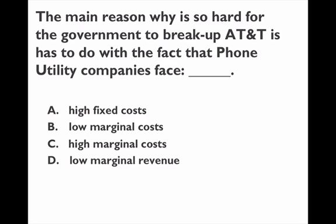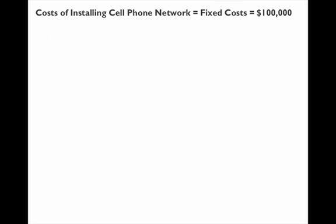In order to explain this a little differently than we did in class, let's come up with some made-up numbers that are not necessarily realistic, but that will make sense within the context of the question. So let's say that the cost of installing a cell phone network for a company like AT&T was $100,000. This is a fixed cost because they'll have to install this network before they open their doors.